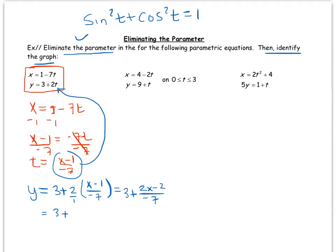And then that can break up to 3 plus 2 over negative 7 times x.